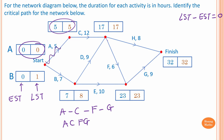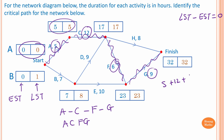Please take note: the critical path helps you find the shortest time to complete the project. In this case, the shortest time is 5 hours plus 12 hours plus 6 hours plus 9 hours, which equals 32 hours. So the shortest time to complete this project is 32 hours.